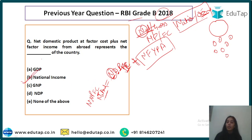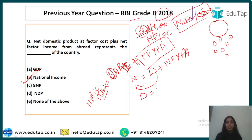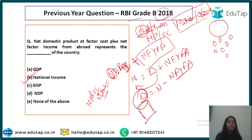The answer is NNP FC — national income. To convert domestic to national, add net factor income from abroad. To convert national to domestic, deduct net factor income from abroad, since domestic does not account for earnings of our factors from outside the territory.